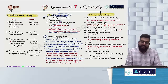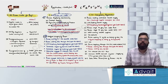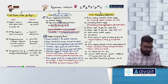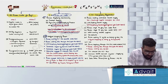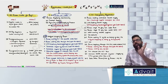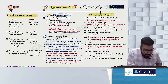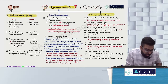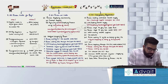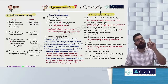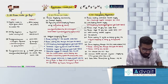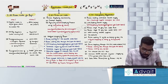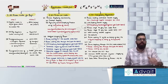Alright everyone, let's quickly go ahead and revise the chapter of registration — who is required, who is not required. We are talking about the chart of registration: am I liable or am I not liable? The first thing is section number 22, which talks about persons who are liable; section 23, persons who are not liable; and section 24, persons who are required for compulsory registration.